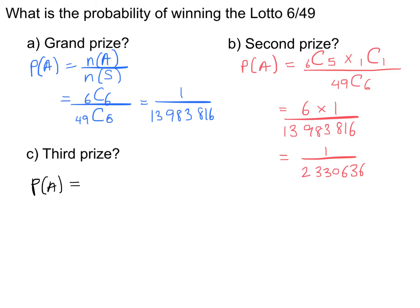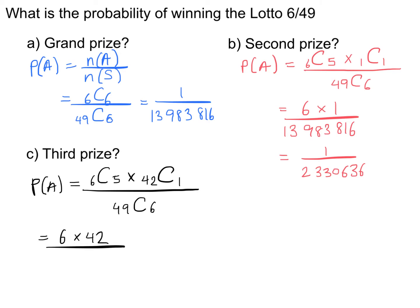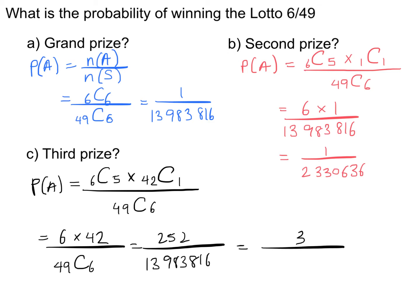The probability of winning third prize is: 6 choose 5 for the five winning numbers, times 42 choose 1 for one of the non-drawn numbers, divided by 49 choose 6. That gives 6 times 42 over 13,983,816, which is 252 over 13,983,816, reducing to 3 over 166,474.